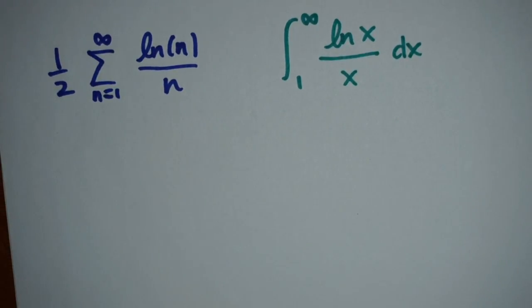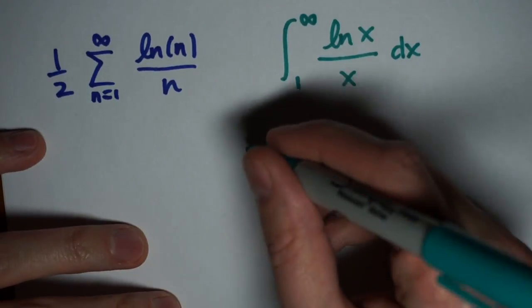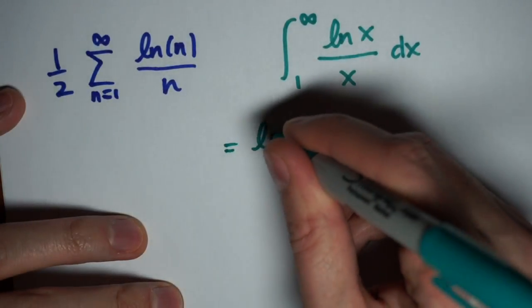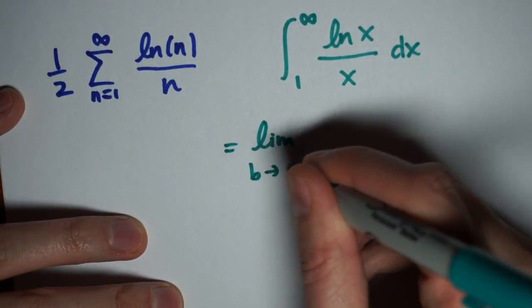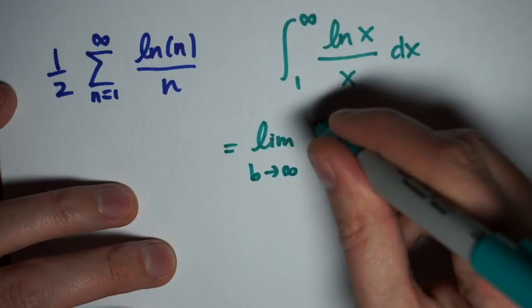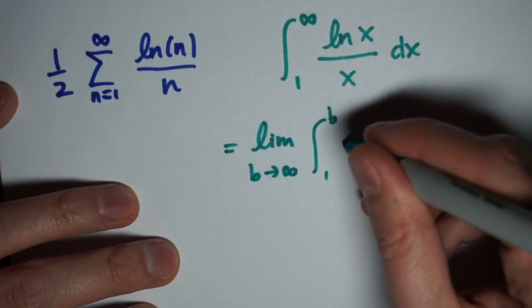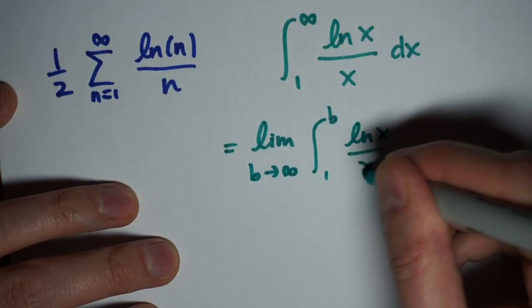Because this is an improper integral, I can evaluate this by using the limit as the top bound of the integral goes to infinity. So I'm going to write this as the limit as b goes to infinity of the integral from 1 to b, the natural log of x divided by x dx.